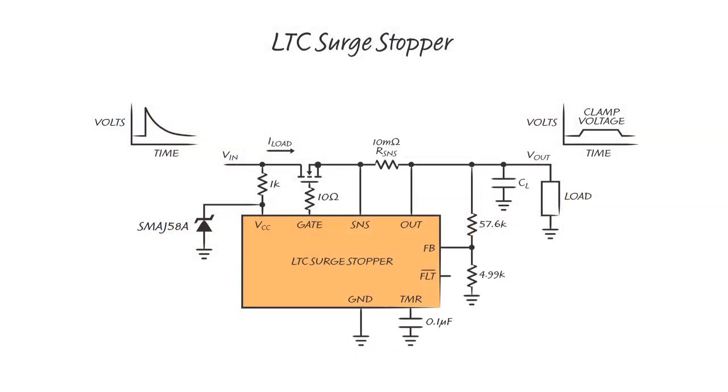Linear technology surge stoppers protect downstream circuitry from surges which last from microseconds to DC. Previous LTC surge stoppers work by normally passing the input to the output through a low-loss N-channel MOSFET, but if the input rises too high, they clamp the output at a safe level. The output voltage is regulated by controlling the gate of the N-MOS. This regulation level is set with feedback resistors.